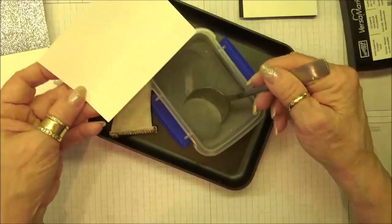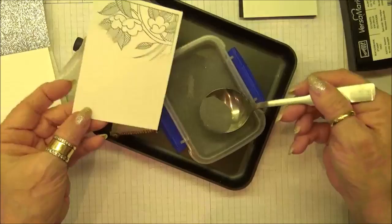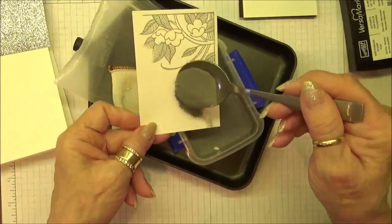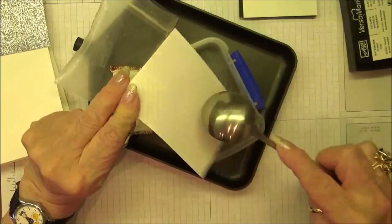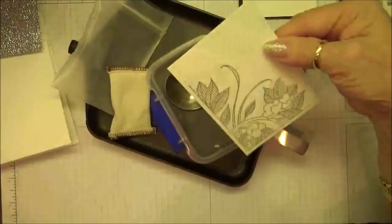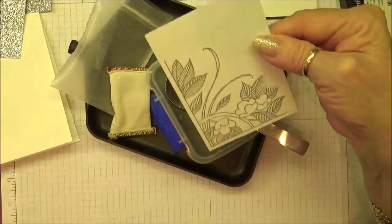And yes, that is rice that you see in my embossing powder. The reason I have that in there is that sometimes in my climate the embossing powder gets kind of, it gets, it clumps together.